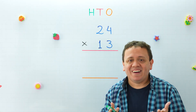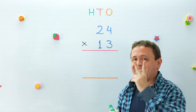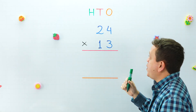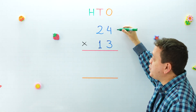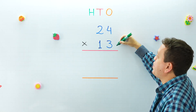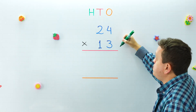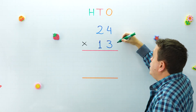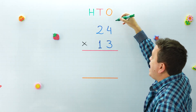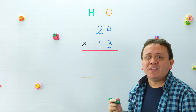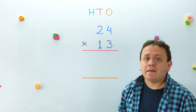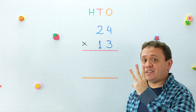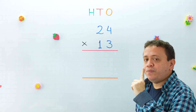Hello guys, today we are going to learn how to multiply by two-digit numbers. In this example we have 24 times 13. Remember to write one number above the other so the ones and tens places are lined up. To multiply by a two-digit number you just need to follow three steps.